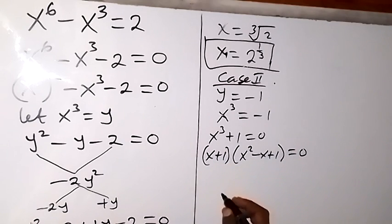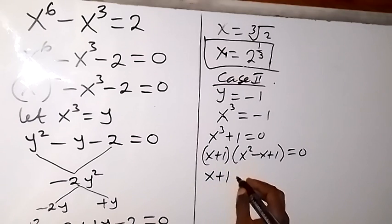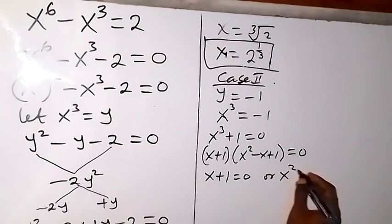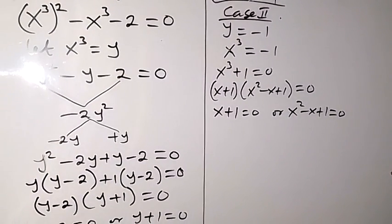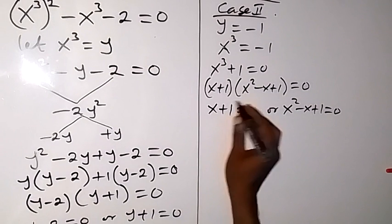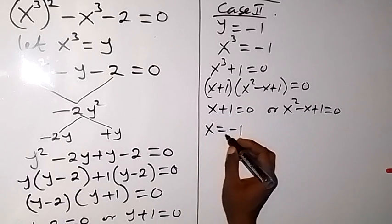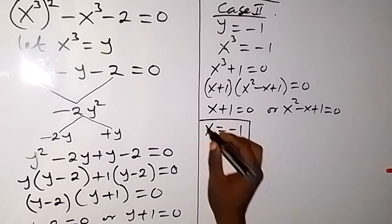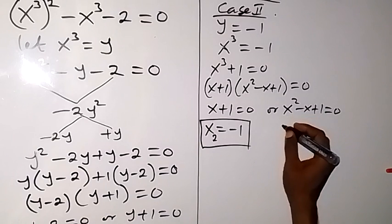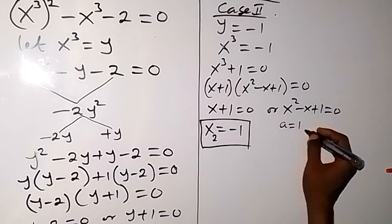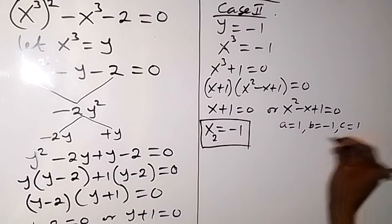Now, either of these could be 0. We have x plus 1 equals to 0, or we have x squared minus x plus 1 equals to 0. For the first one, when we take plus 1 to this side, we have x equals to minus 1 — let's call this the second value of x. On the other side, we have a quadratic equation where the coefficient of x squared, which is a, is 1; b, the coefficient of x, is minus 1; and c is 1.